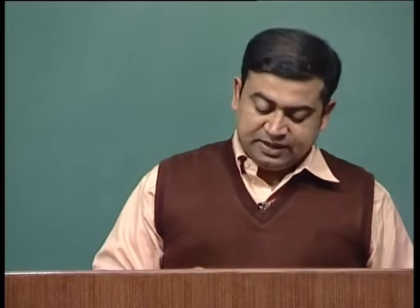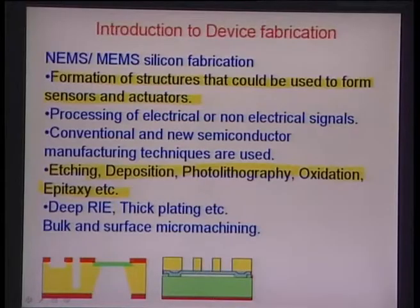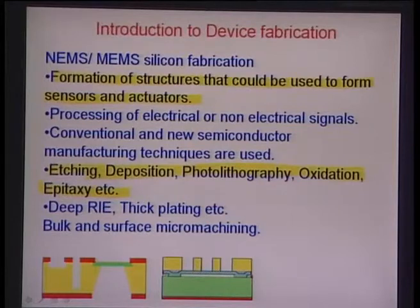Let us look at fabrication aspects, starting with what silicon offers as a fallout of the microelectronics industry. This topic is about forming structures for sensors and actuators using conventional silicon processing techniques like etching, deposition, photolithography, oxidation, and epitaxy. The purpose is to process either electrical or non-electrical signals generated by sensing activity.